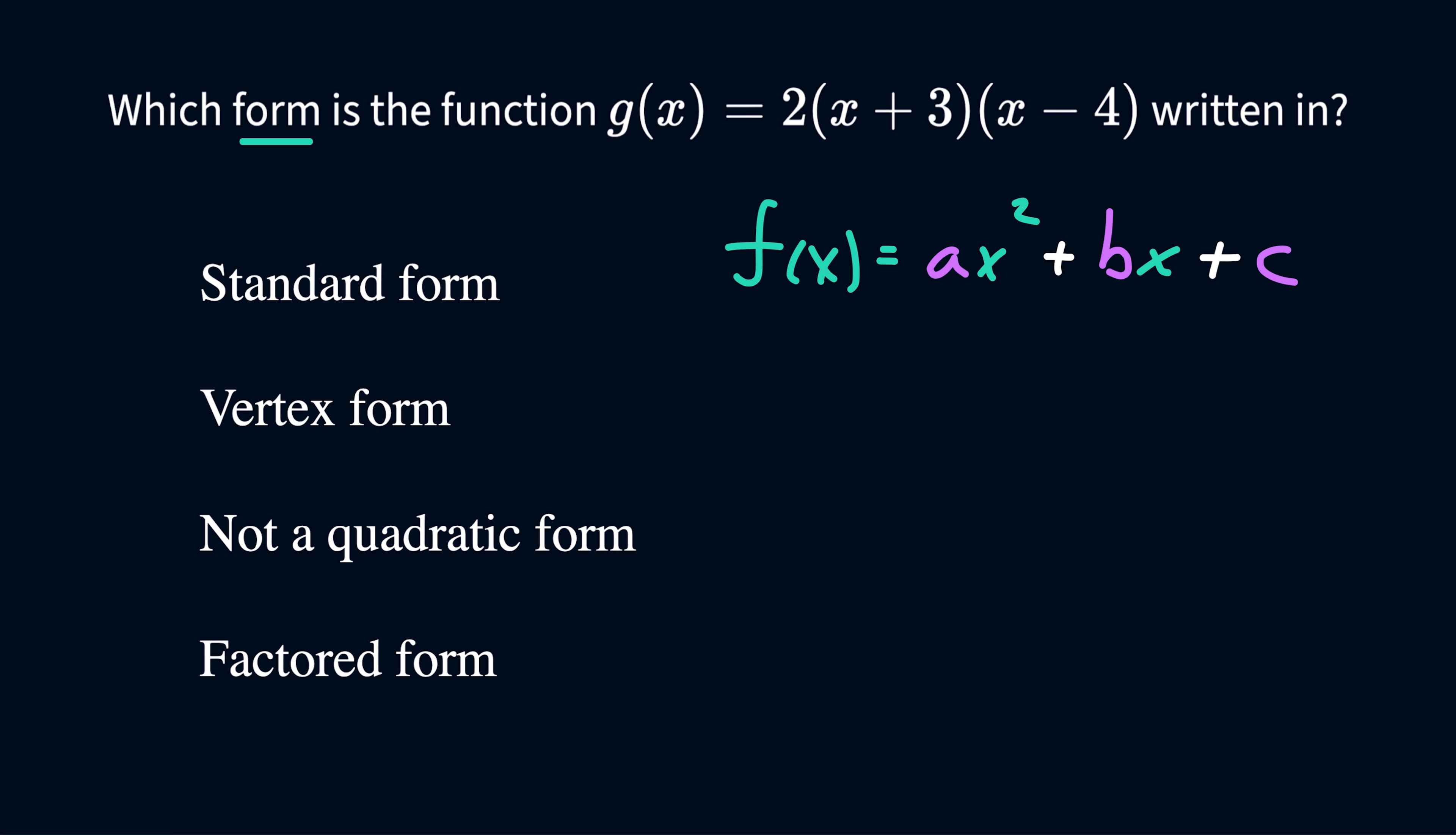Another form of the quadratic function is vertex form. So the vertex form has a leading coefficient of a and that's going to be multiplied by this squared binomial. Now this binomial must be squared and it's going to have x minus some constant h. The h is a special term that's going to represent the x value of the vertex.